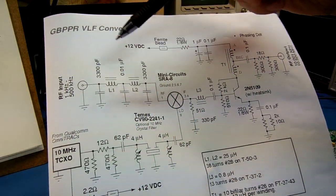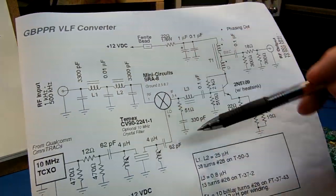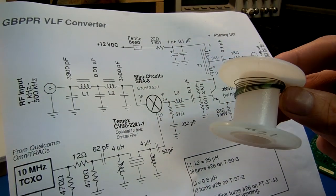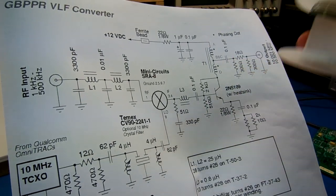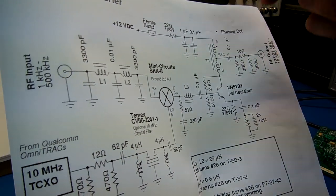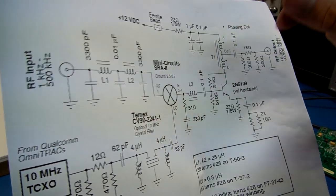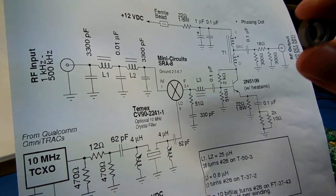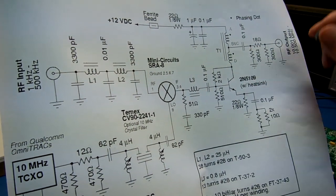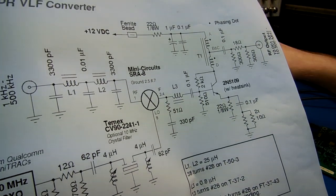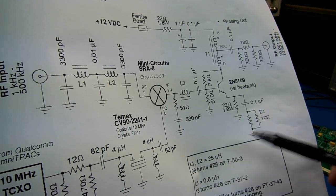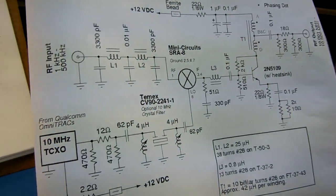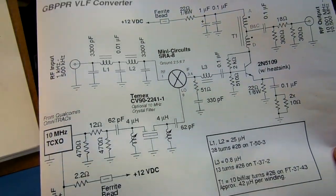L1 and L2 should be around 25 microhenries. I have 38 turns of number 26. This is number 26, it's the green enameled wire from Radio Shack. That's what the toroids look like. You just, every time you wind it through the center of the toroid, it counts as a turn. So you wind 38 turns of number 26 wire, gauge, number 26 gauge wire. And that should be around 25 microhenries. Like I said, this doesn't have to be exact. And you can use different core material in a pinch.